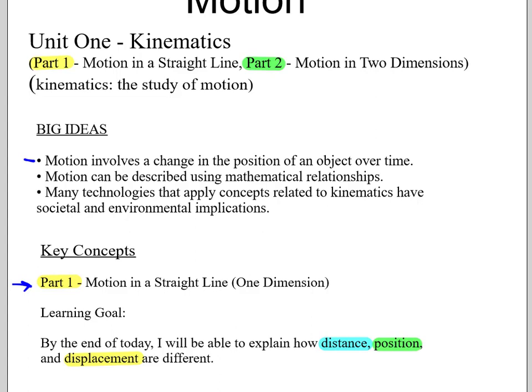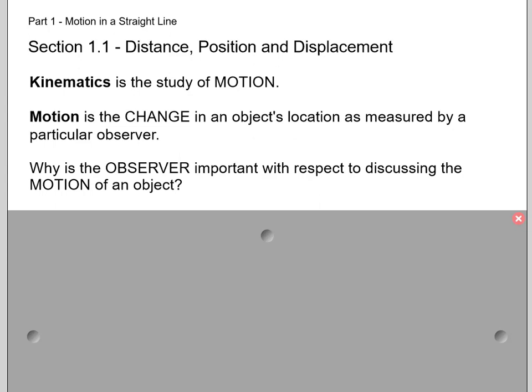Those are words that sometimes in our regular English language are interchangeable, but in our science language, they all have very definite meanings that are different. So as I just said, kinematics is the fancy name for the study of motion. Motion is the change in an object's location as measured by a particular observer. And so it begs the question, why is the observer important with respect to discussing the motion of an object?